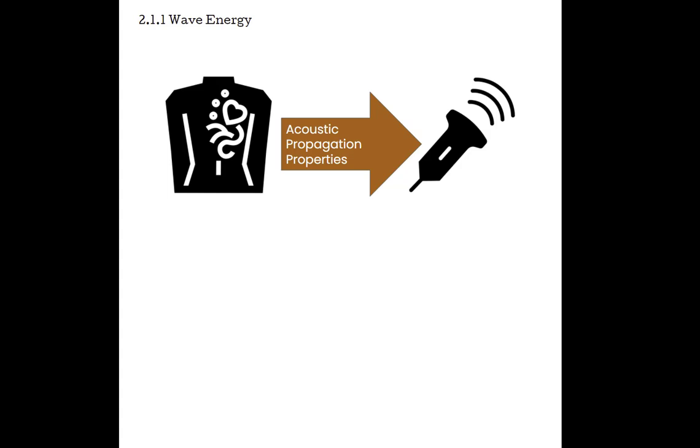Waves are one way in which energy can be transferred from one location to another. In the case of ultrasound, the machine sends out a high frequency wave. That acoustic energy in the wave is transferred into the patient, and then some of that energy is transferred back to the machine to create our images. When we are studying ultrasound, we will spend a lot of time on how the body affects the wave and energy transfer. This is known as acoustic propagation properties.